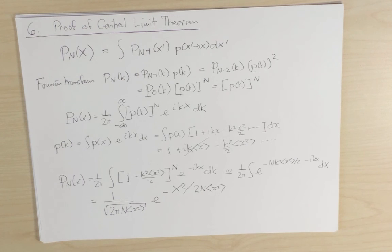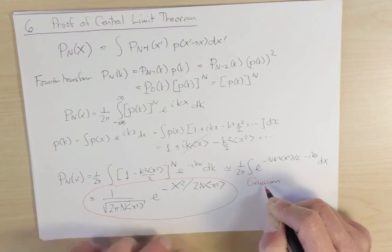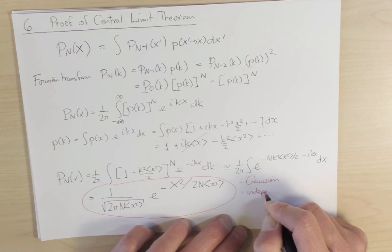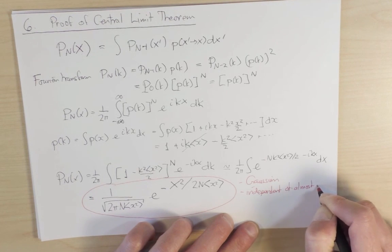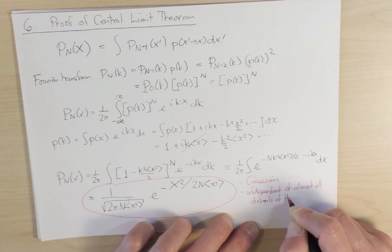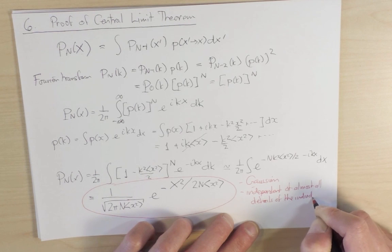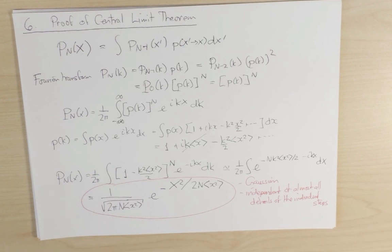The thing I want to emphasize is that this distribution is Gaussian. Furthermore, it is independent of almost all details of the individual steps. This universal behavior is a powerful unifying theme in many problems in statistical physics, and it played an important role in the development of the theory of random walks.